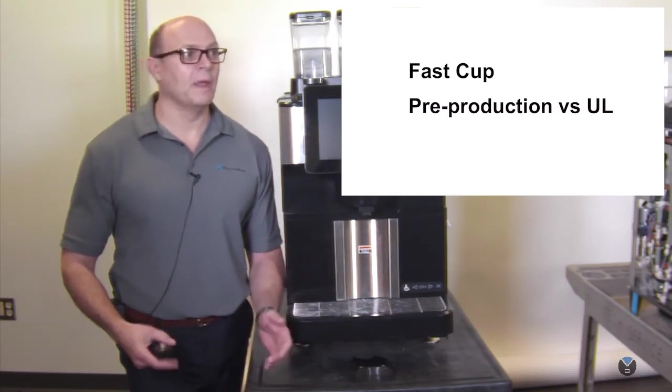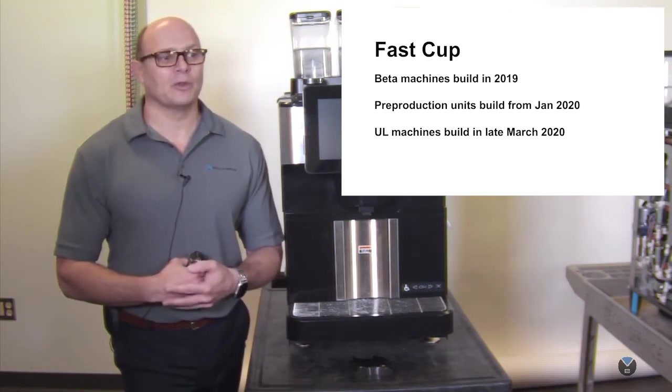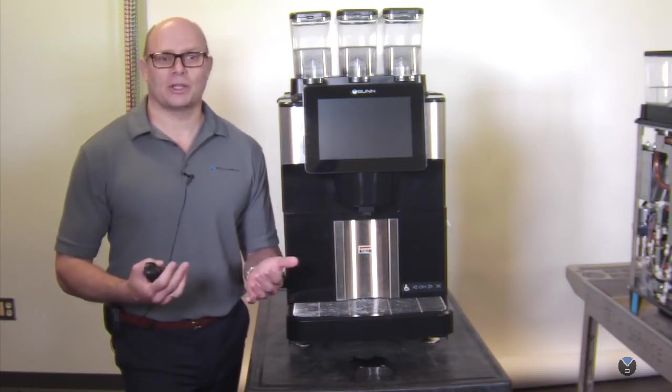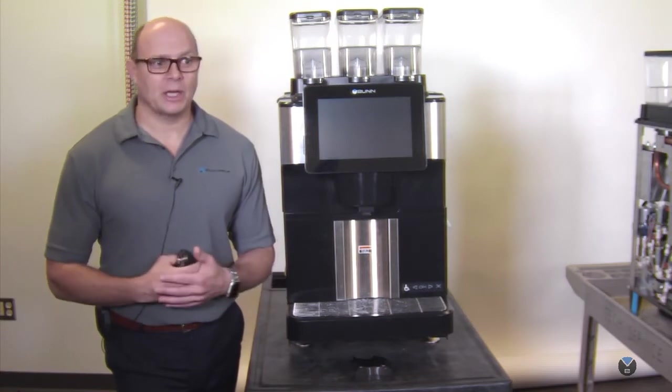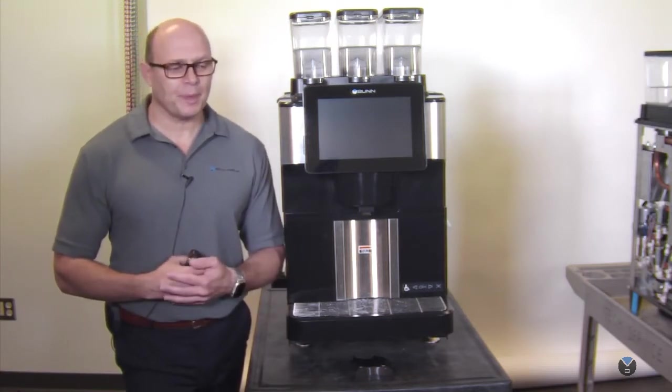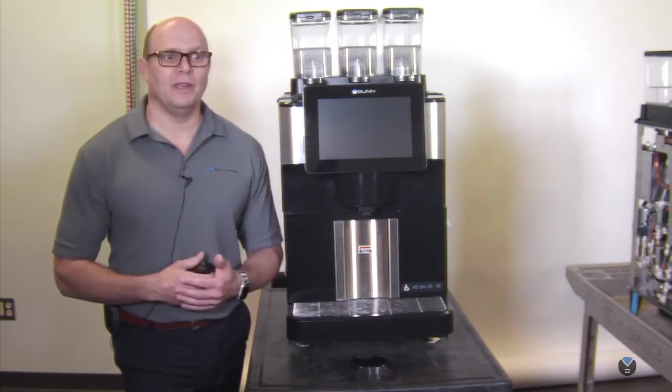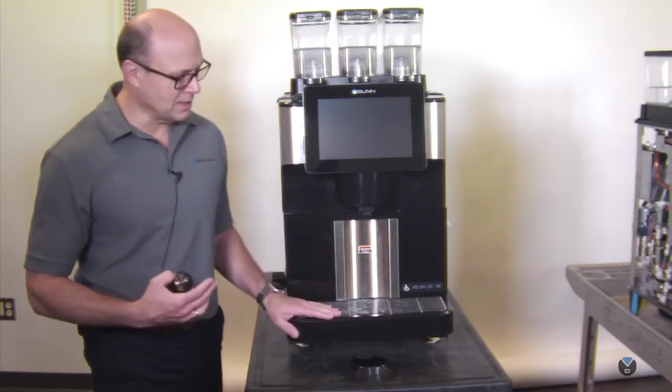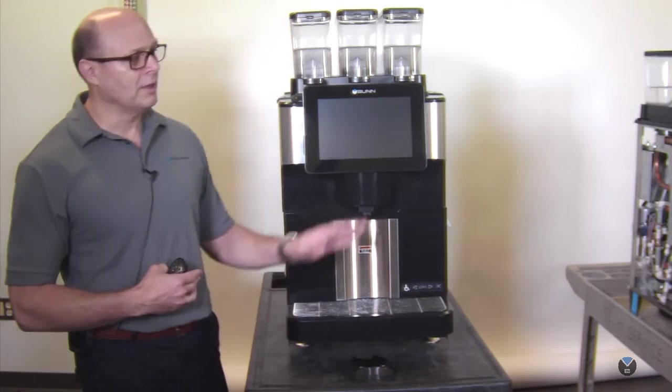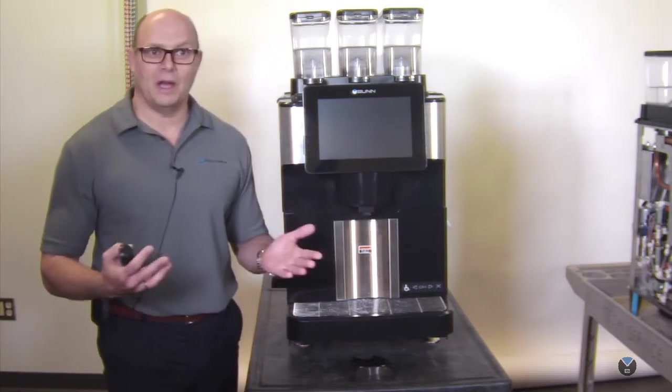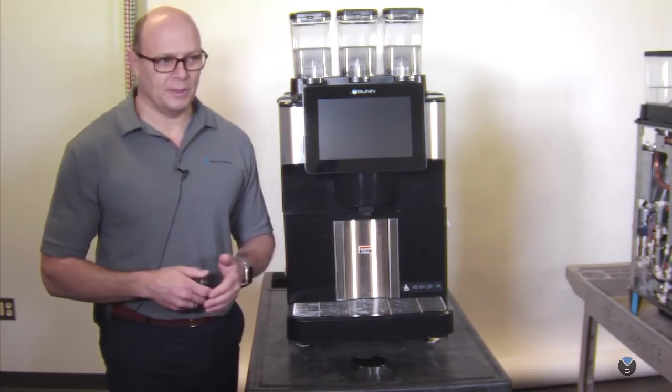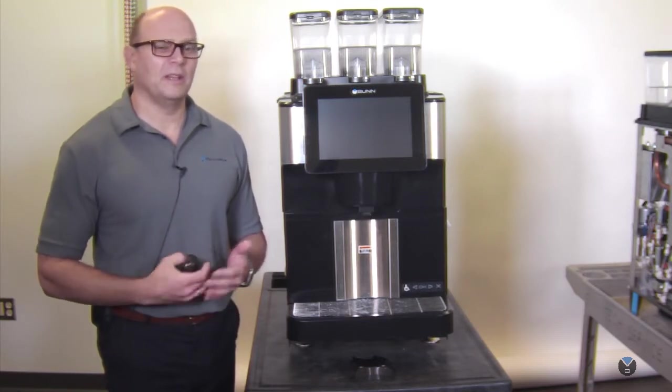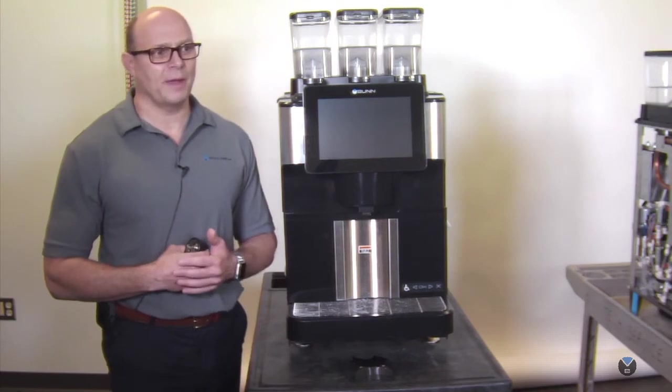Pre-production units versus UL, what does that really mean? We built beta units in 2019 that were installed in the market, and we built pre-production units starting in January 2020. The UL machines were built starting in late March. We will cover all these changes now and show them on two different types of machines. This unit is the pre-production unit. The other unit I will be moving to will be the UL unit.